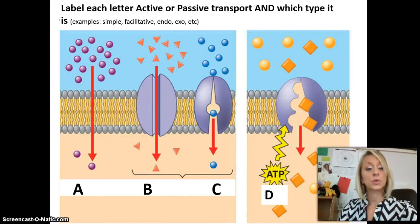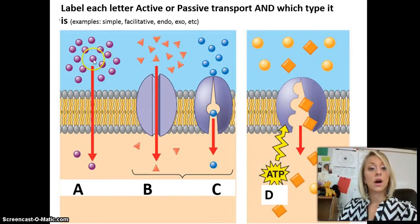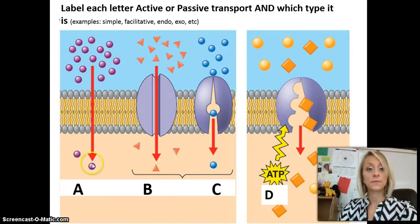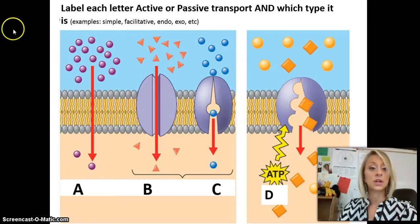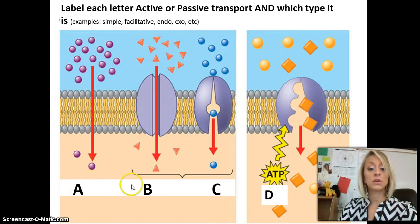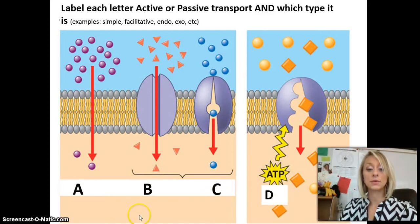Let's do a quick review. Each letter is going to be an example of active transport or passive transport, and each letter is either facilitated diffusion, simple diffusion, endocytosis, or exocytosis. Take a minute and decide what letter A, B, C, and D should each be labeled.